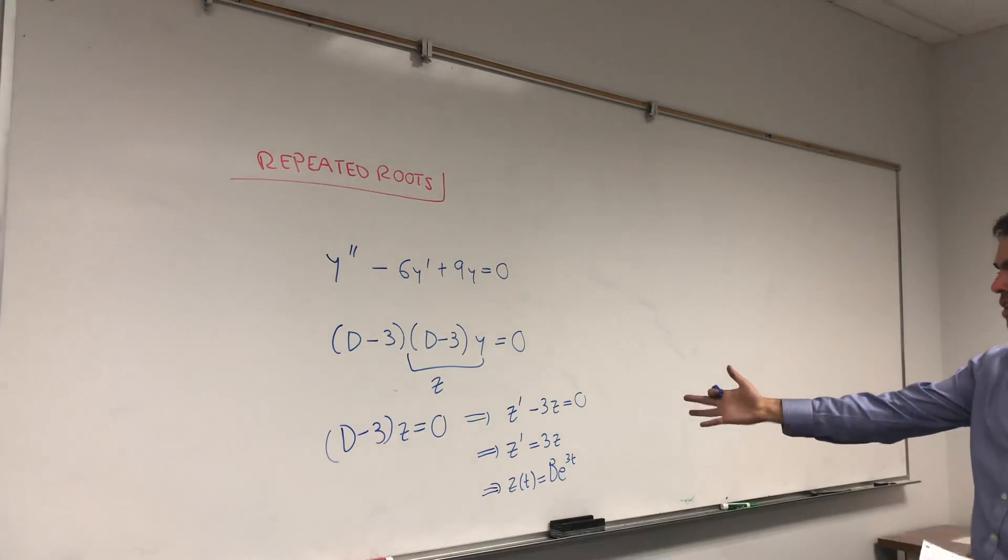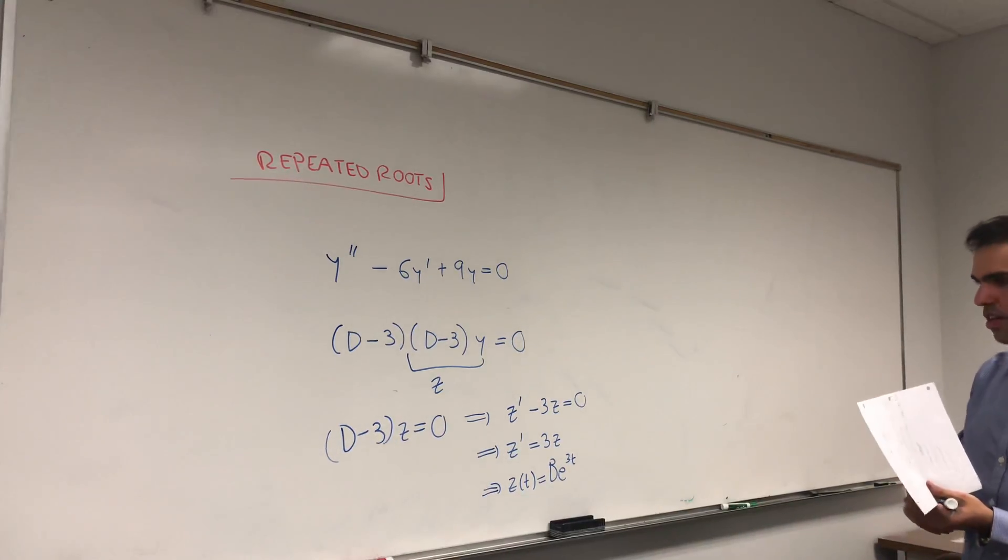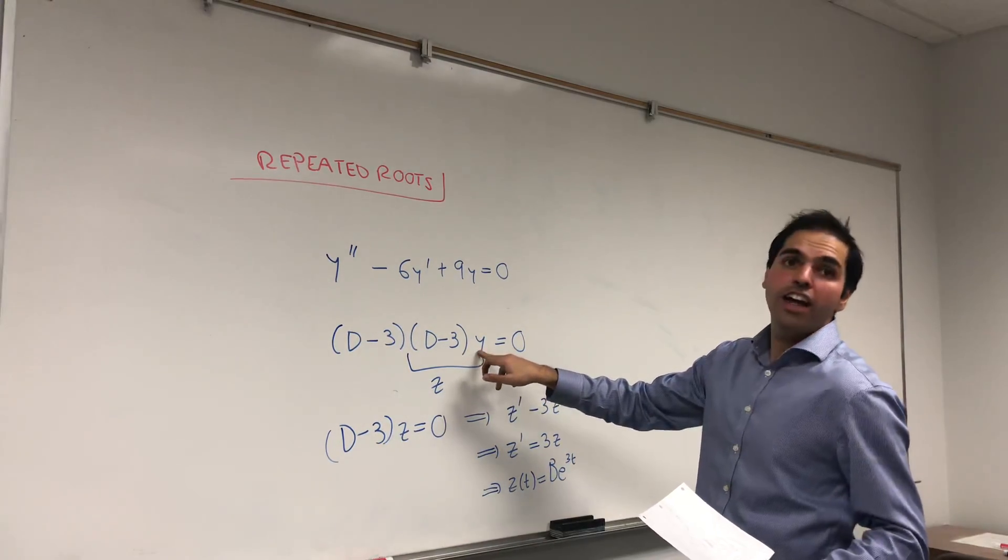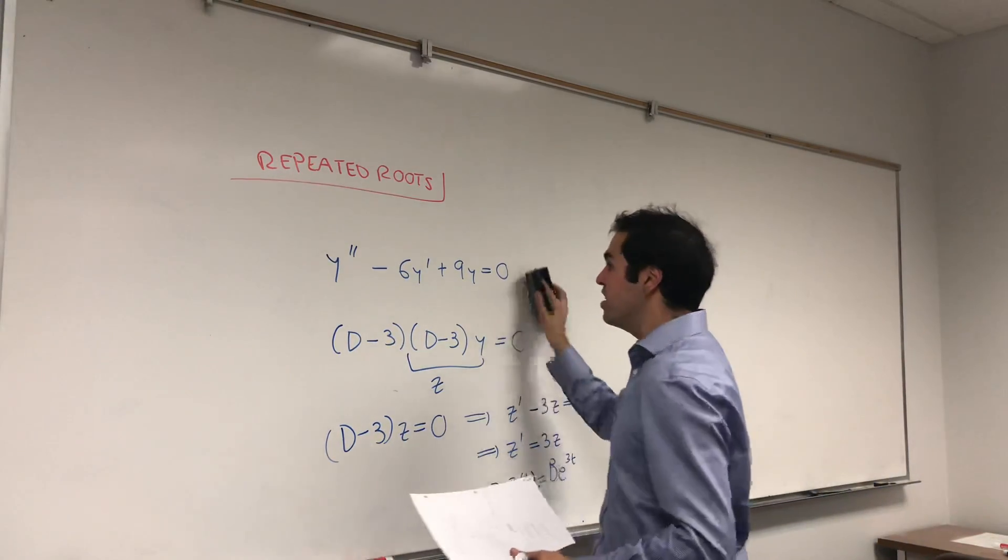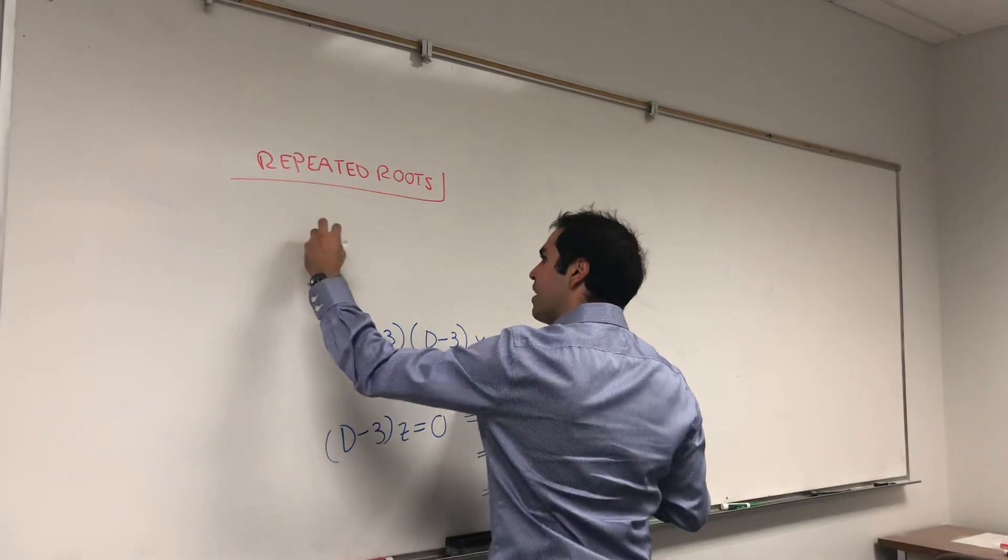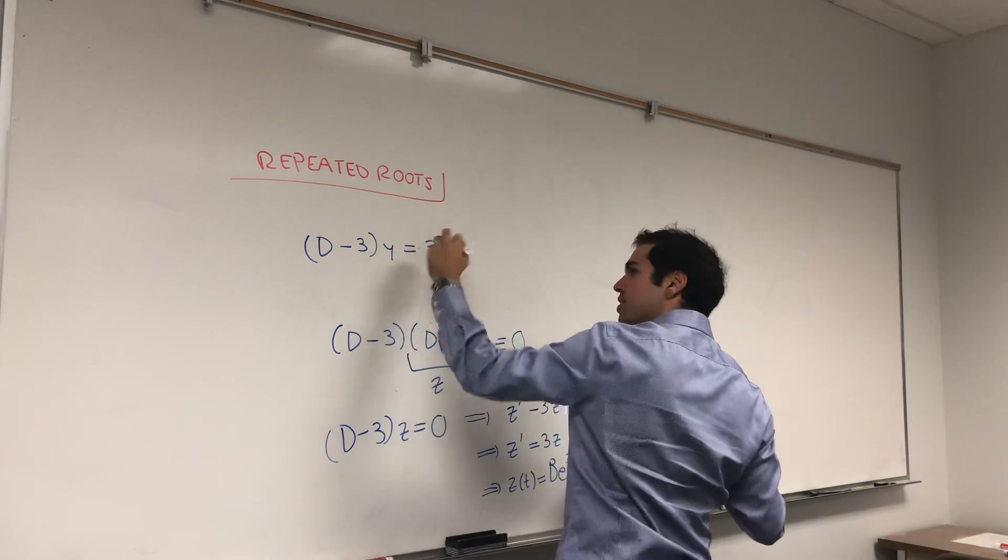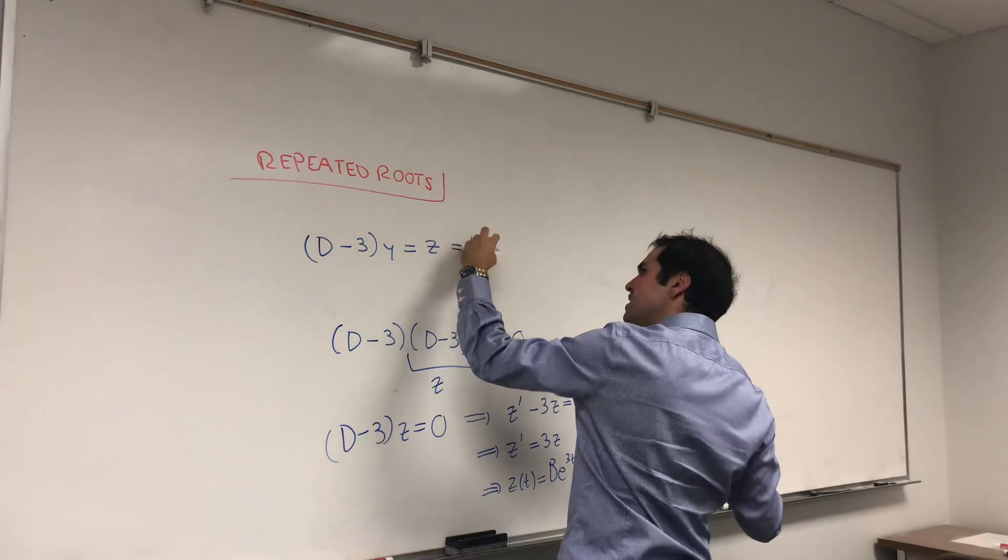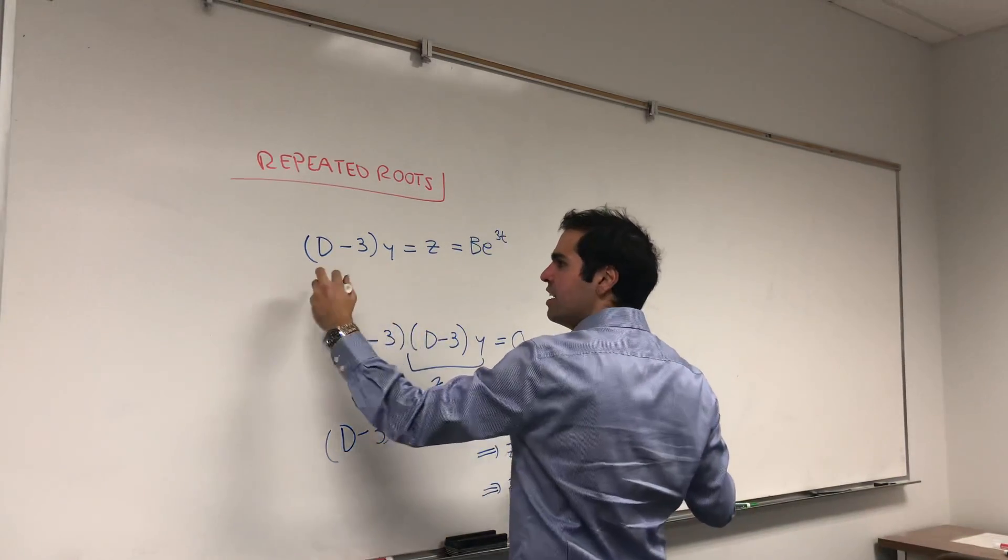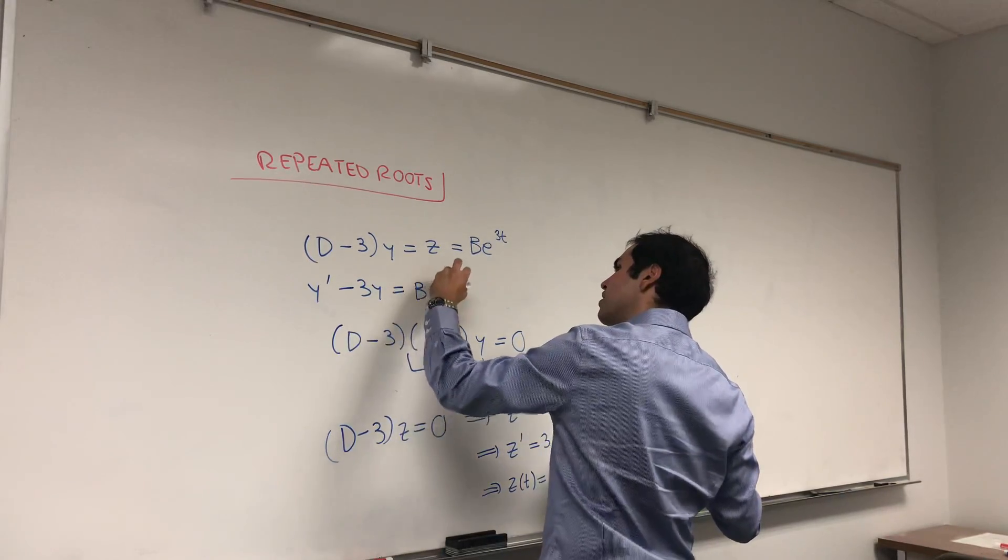So, z, which is defined by d minus 3y, is just be to the 3t. And now that we know z, let's just find y via this equation. So, we have d minus 3y equals z, again, by definition. But z is be to the 3t. So, unraveling this, we get y prime minus 3y is be to the 3t.